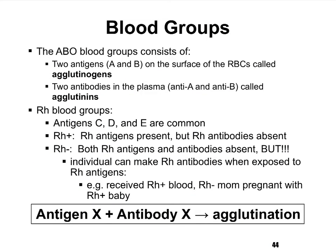When we learn about blood groups, we need to keep track of antigens, which are always going to be attached to or part of the surface of a red blood cell, and antibodies, which float around in the blood plasma. The fancier ways of referring to antigens and antibodies are agglutinogens for antigens, and antibodies can be called agglutinins.